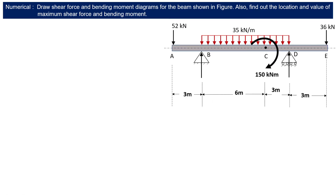Let us understand the diagram more clearly. ABCDE is the beam and it is simply supported between B and D, having a length of 9 meters. Concentrated point loads are applied at A and E. The simply supported span BD is loaded with a uniformly distributed load of intensity 35 kilonewton per meter, and a moment of 150 kilonewton meter is acting at section C.